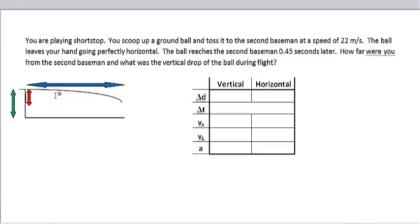So that said, the first question is how far were you from the second baseman? So that would be measuring this blue arrow. And then what's the vertical drop? We're measuring the red arrow. So let's write down what we know. As always, we'll start with the vertical.